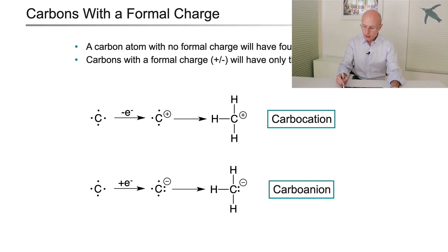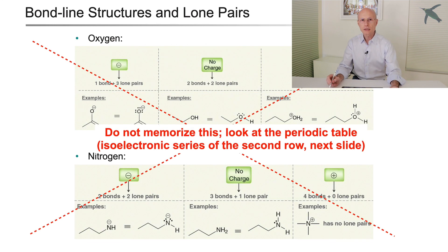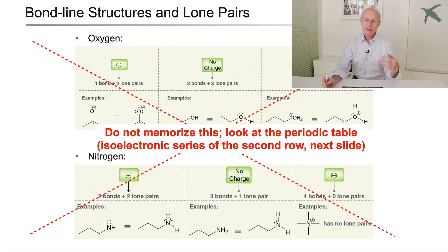But what about oxygen and nitrogen? The common approach is you just memorize it. If you have an oxygen that makes only one bond, it means it has one bond, three lone pairs and a negative charge. If you have an oxygen with no charge, it means it has two bonds and two lone pairs. And there is absolutely no need to memorize this. It's a lot easier to understand it. Let's see how.